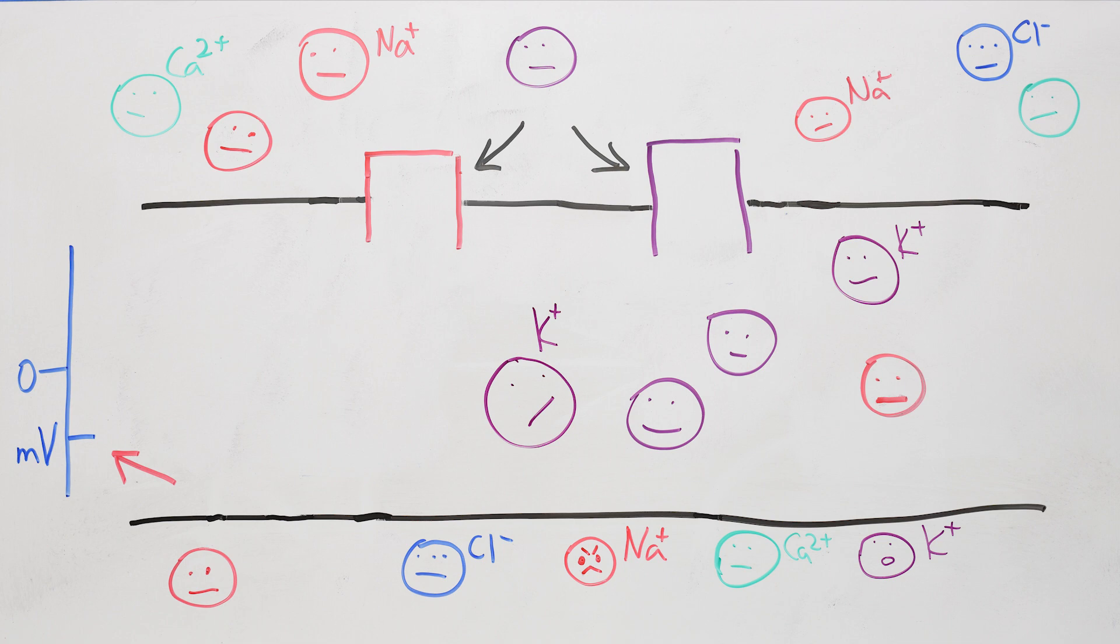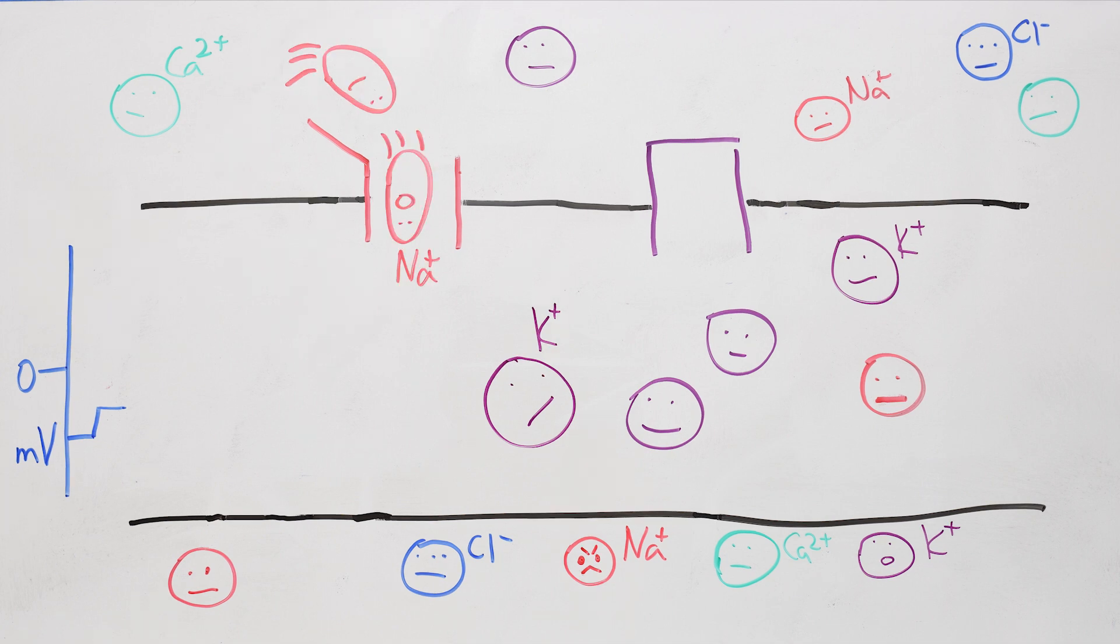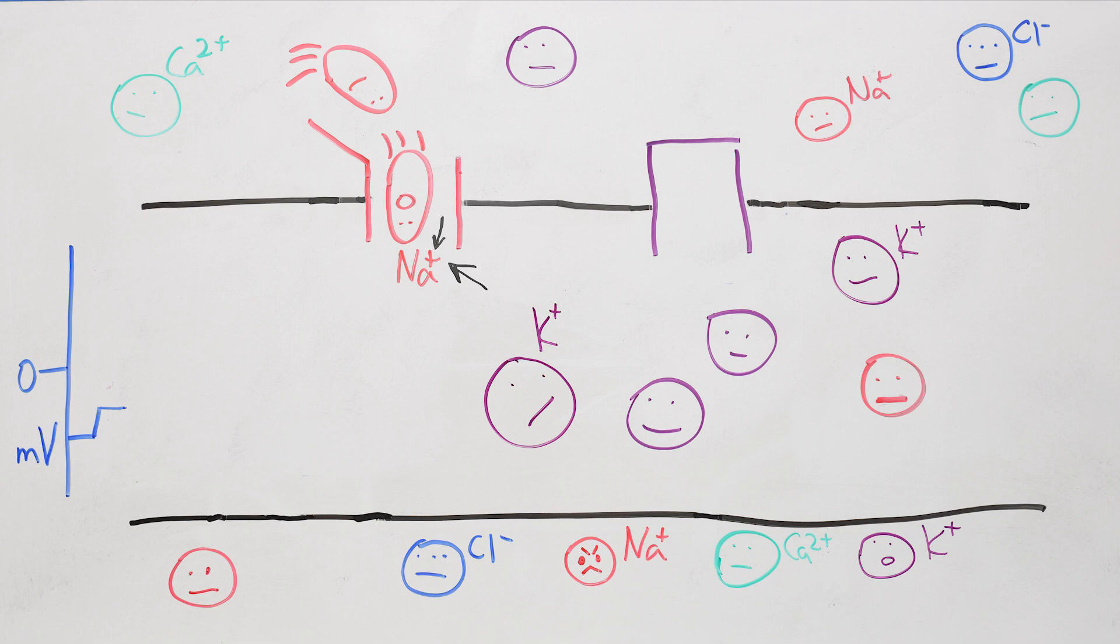Now suppose something raises the voltage a bit, like incoming current from the dendrites. That increase in voltage is enough to make the sodium channels open, and the sodium ions start to rush in. Sodium ions carry a positive charge, so inside the neuron the total charge and the voltage increases.